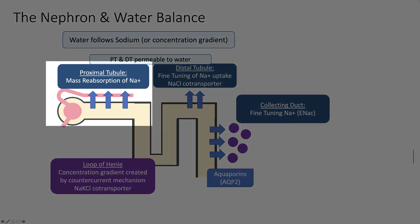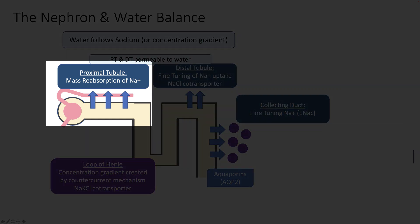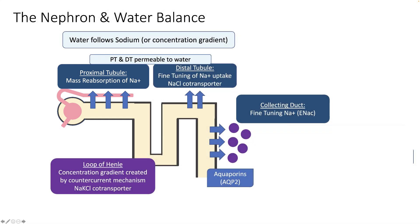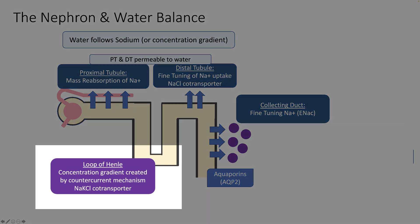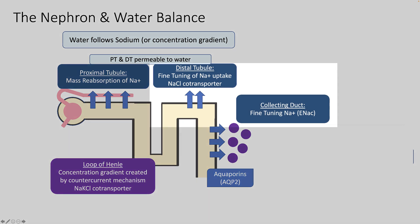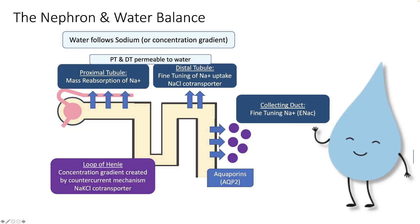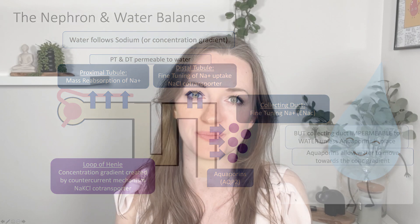In the proximal tubule we have countless sodium channels which reabsorb sodium back into the body, among other things, and this is where the majority of sodium is reabsorbed. Any sodium that is not picked up here can be mopped up later in the nephron in the loop of Henle, the distal tubule, and collecting ducts. Basically in every part of the nephron we have channels and transporters which help us to take in sodium and create a beautiful concentration gradient for water reabsorption.